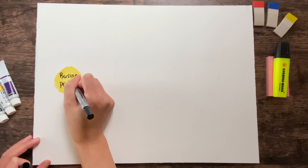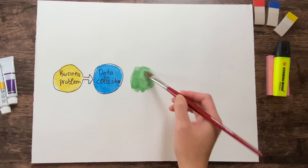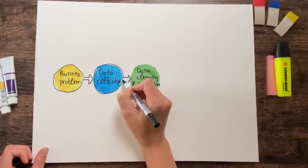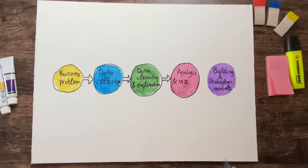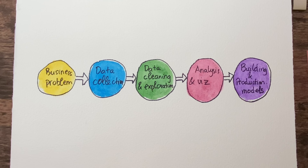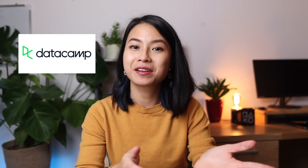A data science process often involves a lot of activities, from data collection, data cleaning and exploration, to data analysis and visualization, storytelling, and building and productionalized models. For this video I'll mostly focus on books that help you develop the skills for these activities.